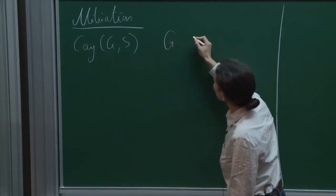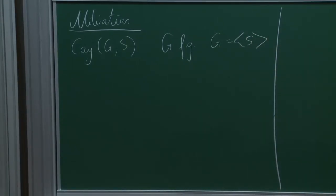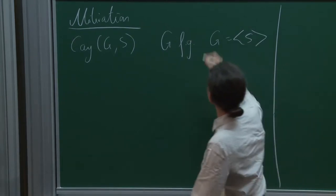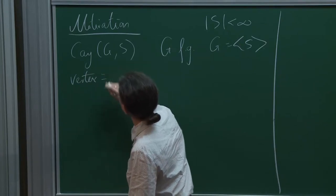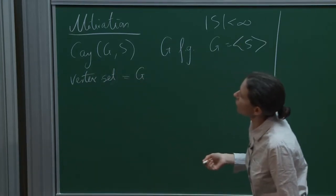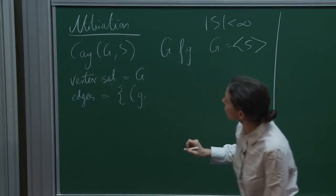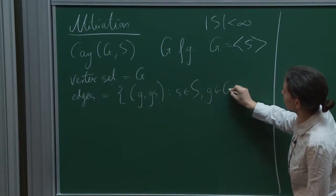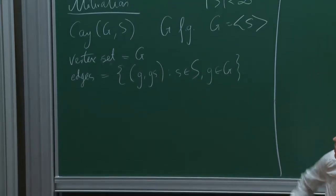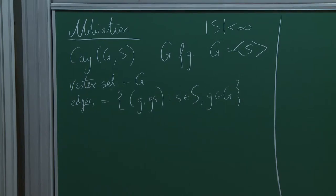So we have a group G which is finitely generated by a set S. For the rest of this talk, the groups will be finitely generated. The Cayley graph — its vertex set is just the group G itself — and we connect two elements of the group if we can jump from one to the other using one of the elements in our finite generating set. This gives us a graph, and the properties of this graph mean that we really can investigate the group using this geometric object.